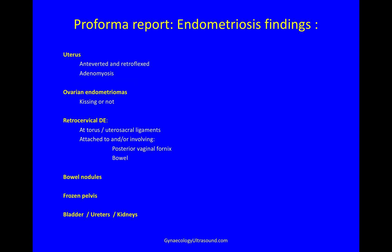As I go through the scan I build up a report in my head, looking for features of endometriosis: whether the uterus is anteverted and retroflexed, if there's adenomyosis, if there are ovarian endometriomas and whether the ovaries are kissing or not, if there's retrocervical deep endometriosis at the torus and uterosacral ligaments, which can be attached to and/or involving the posterior vaginal fornix and bowel.